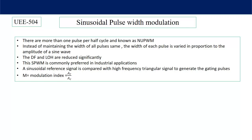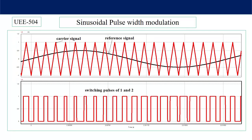This SPWM technique is preferred in industries. Here a sinusoidal reference signal is compared with a high frequency triangular carrier signal to generate the gating pulses. The modulation index is equal to the amplitude of the reference signal divided by the amplitude of the carrier signal.